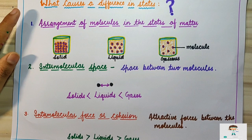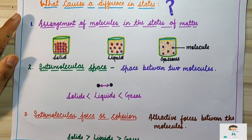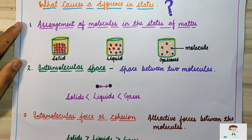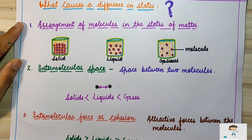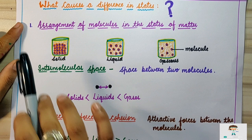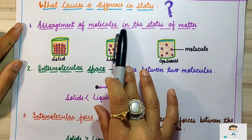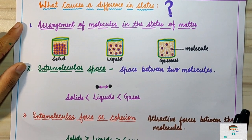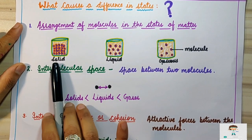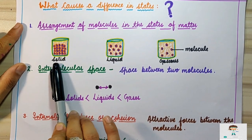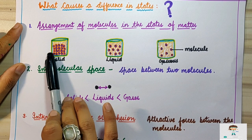After the classification, what is the cause of difference in states of matter? The difference in states of matter arises due to three important factors. The first factor is the arrangement of molecules in the states of matter — how molecules are arranged allows us to give a name to a particular state.